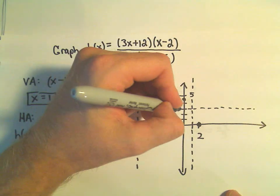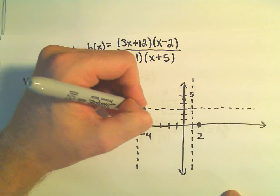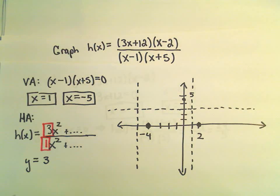So there's y equals 3. So we'll stick that in there. And now at least I've got my asymptotes in place.